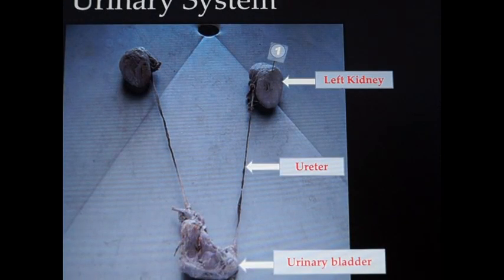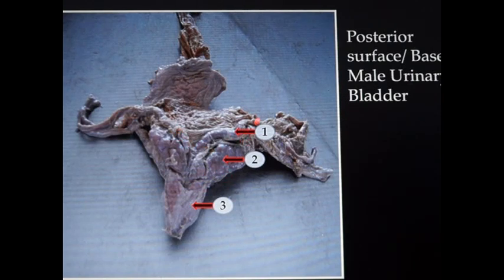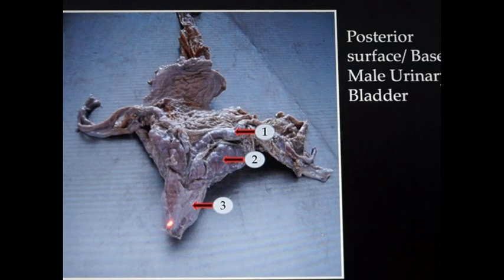Here is a specimen of the excretory system showing the right and left kidneys, ureters, and below them the urinary bladder. The bladder is shown from the posterior side. This is a male urinary bladder — identifiable by the vas deferens entering, the seminal vesicles on either side, and the prostate present posteriorly around the neck of the urinary bladder.